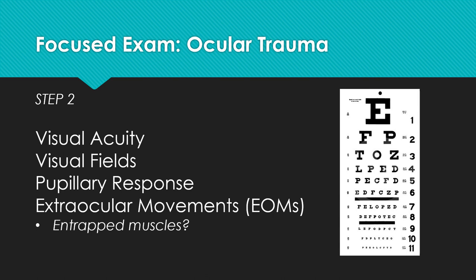After thoroughly inspecting the eye and its surrounding structures, one can continue the exam with more objective measurements of eye function, including assessing visual acuity with a Snellen chart, assessing confrontational visual fields, looking for a proper pupillary response, and assessing extraocular movements to confirm there are no entrapped muscles.